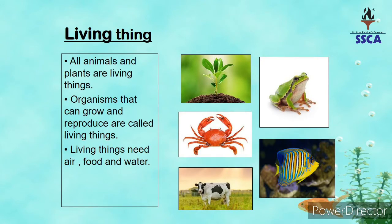Living things — jaanadar cheezay. All animals and plants are living things. Sare animals aur sare plants kya hain? Living things hain. Organisms that can grow or reproduce are called living things. Woh jaanadar cheezay joh nashunuma paati hain, berhti hain, aur apna young one produce kar sakti hain — yeh living things hain.